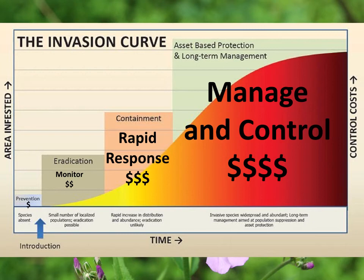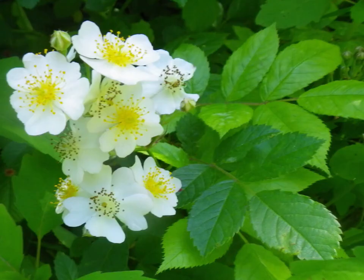This is known as the invasion curve. It shows that the easiest and cheapest way to manage invasive species is to never have them in the first place. The invasion curve starts with prevention at the bottom left-hand corner, then moves up to monitoring — looking for new species. If you find one, eradicate it right away with a rapid response. If you find more of it, contain it to certain areas, and then you're on to manage and control, where it is kind of everywhere but you're making sure it's not spreading to new or high quality areas.